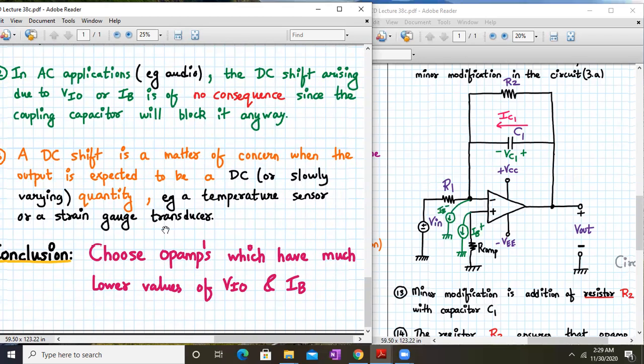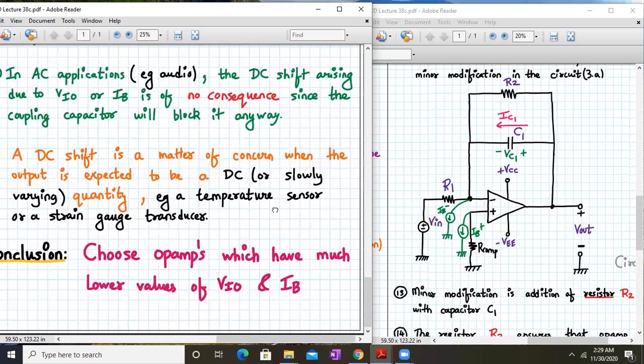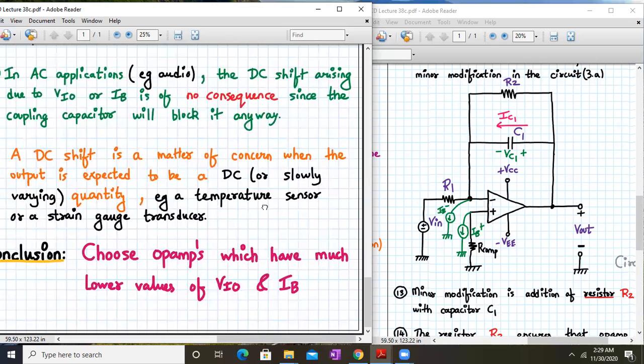A small dc shift is a matter of concern when the output is expected to be a dc or a slowly changing quantity. Example: taking the readings from LM35 temperature sensor might be a slow process, hence its frequency is also very very small. In conclusion, we should choose an op-amp which has a lower value of vio and a higher value of ib.